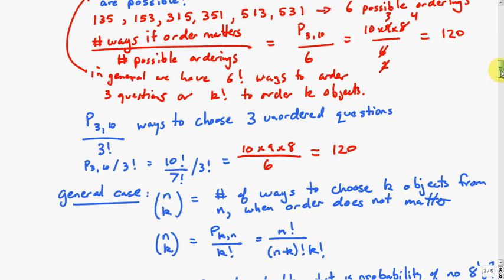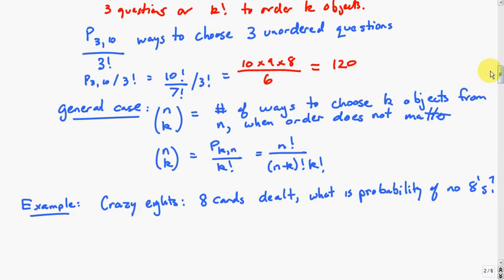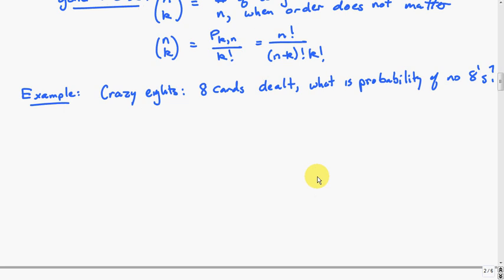In general, if we want to choose k objects from n when order doesn't matter, we'll write this with a bracket with n at the top and k at the bottom. I would pronounce that n choose k. The formula is n choose k equals n permute k divided by k factorial, or n factorial over (n minus k) factorial times k factorial.